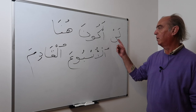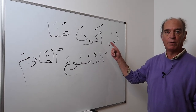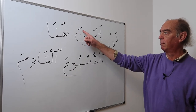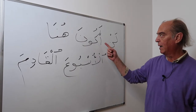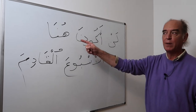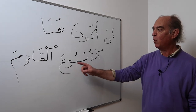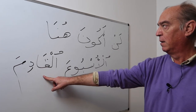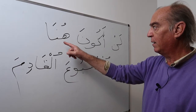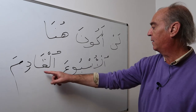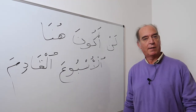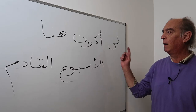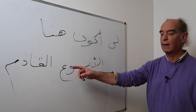Let's use kana in the negative for the future. You know that the future has to be negated with lan and the mansub form. So: ana akounu becomes lan akouna — I won't be. Lan akouna huna al-usboo' al-qadim: I won't be here next week. This sentence applies to me because I am taking a few days of holiday for Christmas.